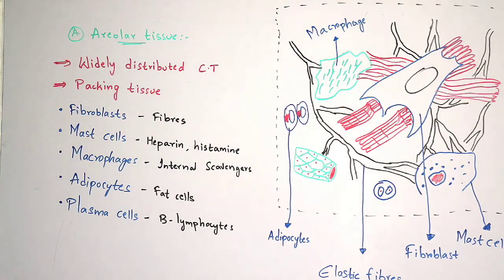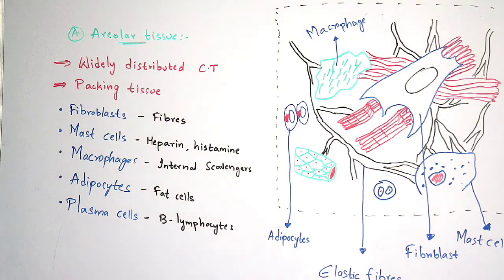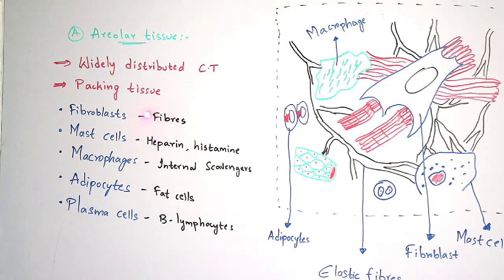Areolar tissue is called packing tissue because fibroblasts, mast cells, macrophages, adipocytes, and plasma cells are together and mainly form a pack present within the tissue. Fibroblasts secrete and regulate fibers — collagen fibers, elastic fibers, and reticular fibers. Along with these, reticular fibers are also produced.